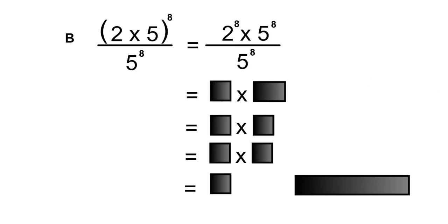We'll keep the 2 to the power of 8. And with 5 to the 8, divided by 5 to the 8, they're both powers with the same base, so we'll subtract the exponents. So 5 to the 8 minus 8. And 8 minus 8 is 0, so that's 5 to the 0.